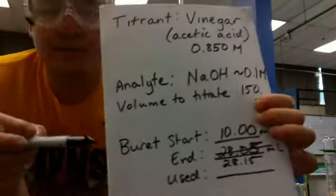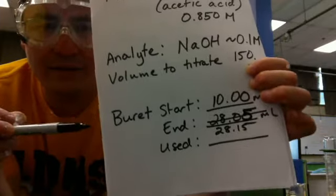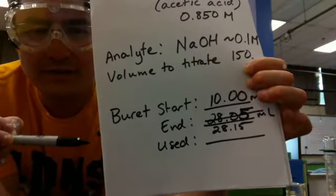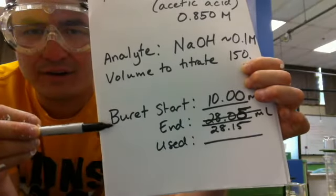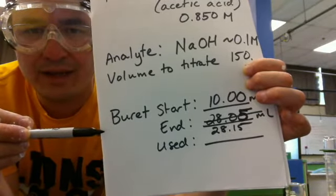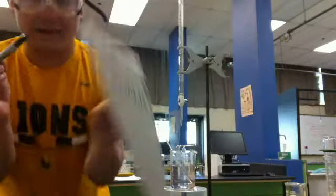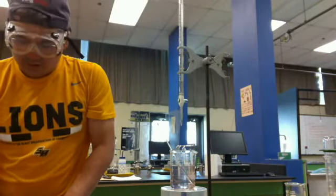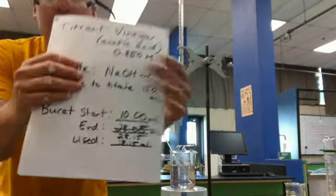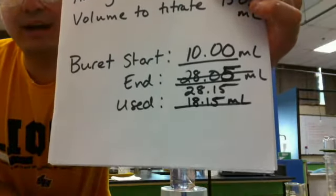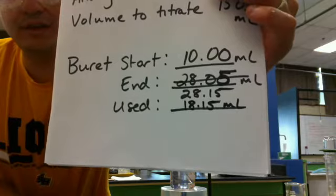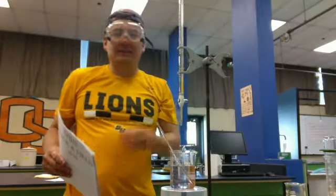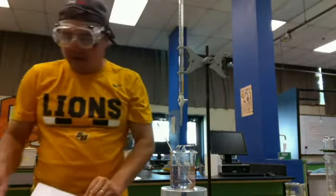So to find the amount of sodium hydroxide that I, or sorry, vinegar that I used, I'm going to subtract my ending amount. I'm going to take my start amount from my end amount. So 28.15 minus 10, I used 18.15 milliliters. So I used 18.15 milliliters of vinegar to neutralize that. So I didn't quite use the 20 that I had estimated, but it was pretty close, and this is much more precise.